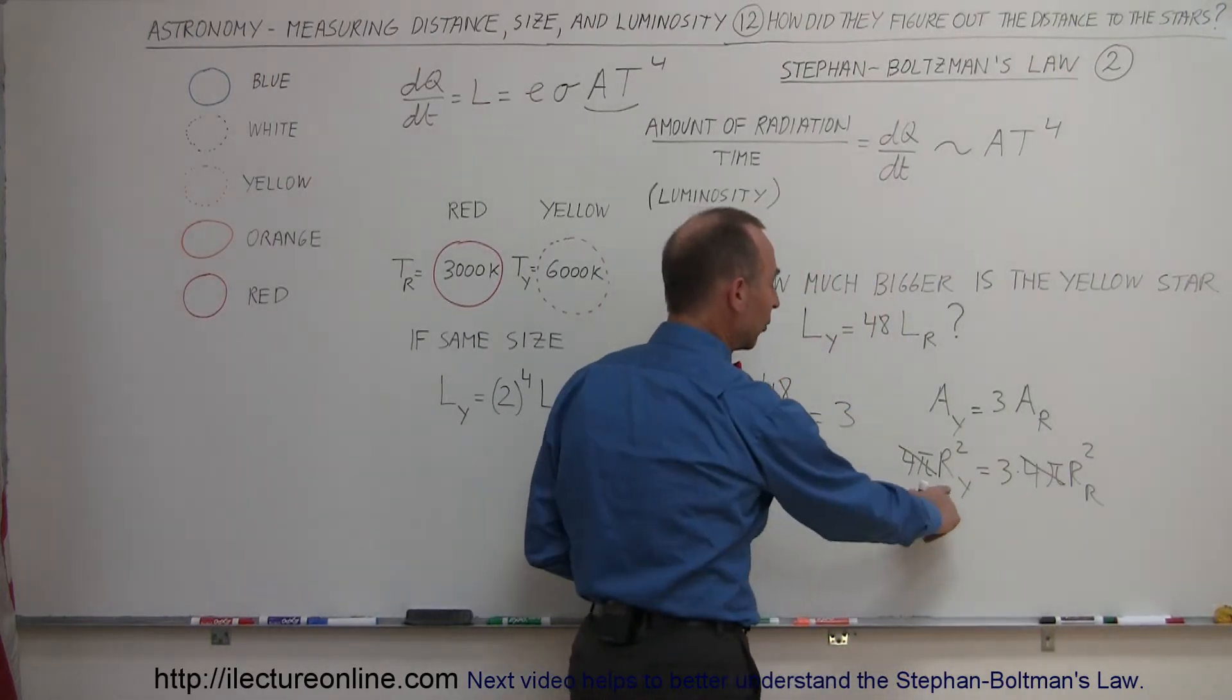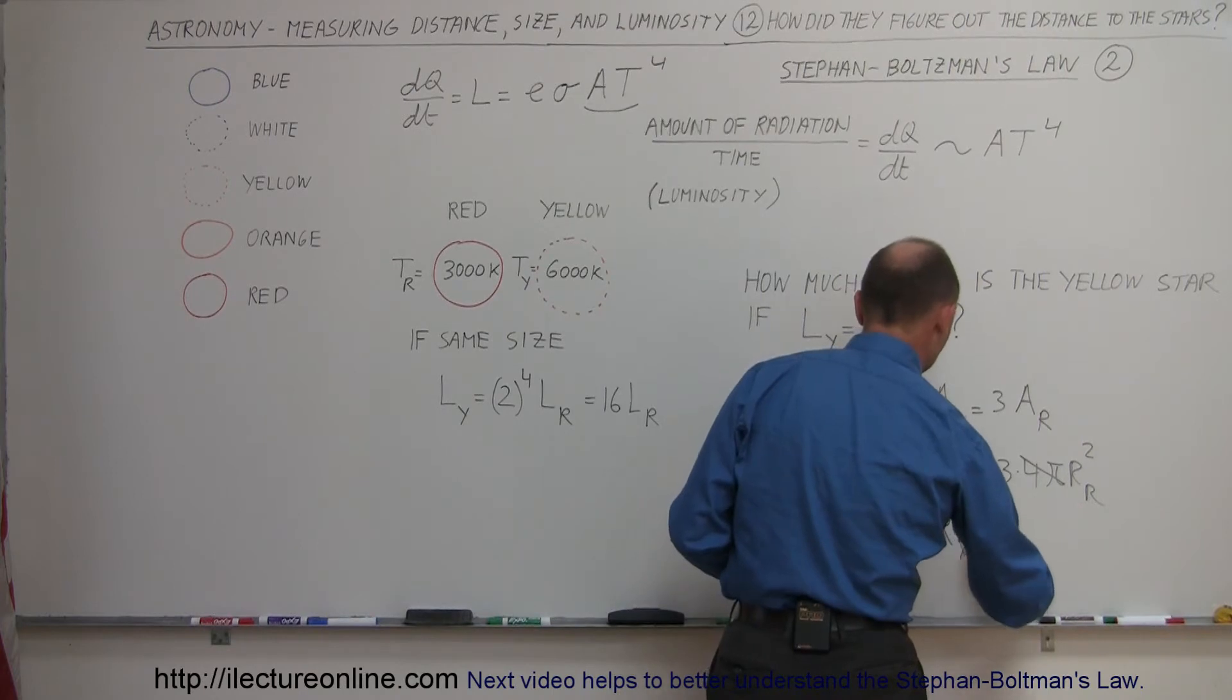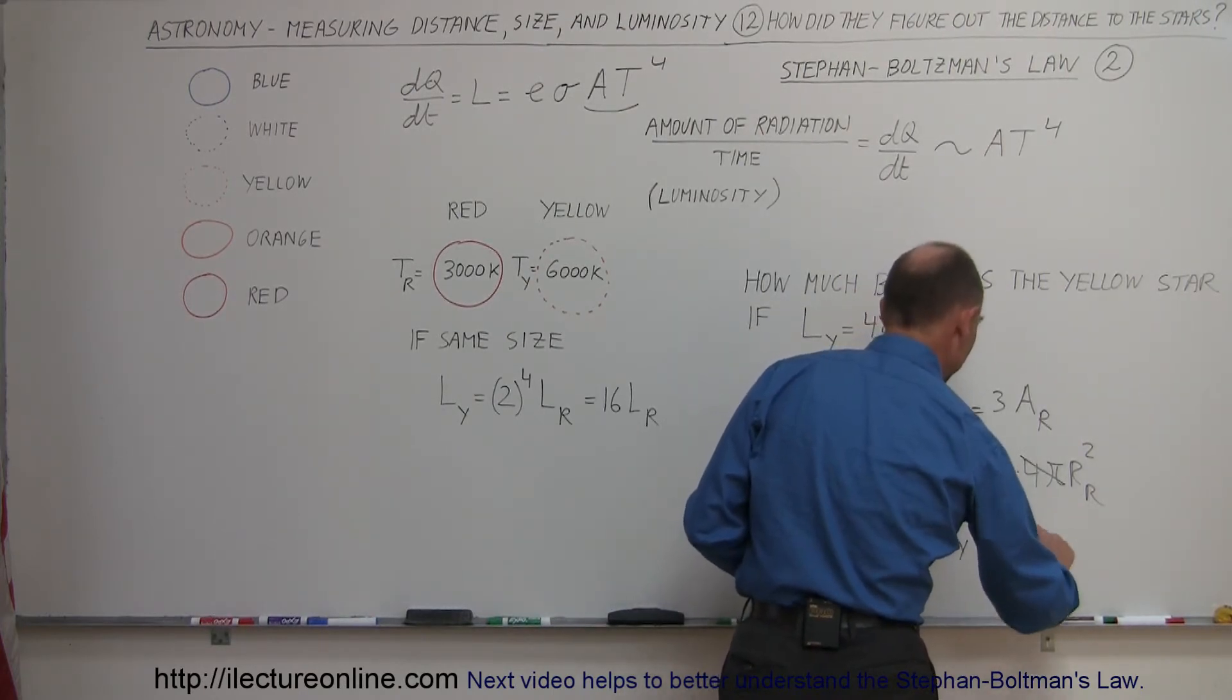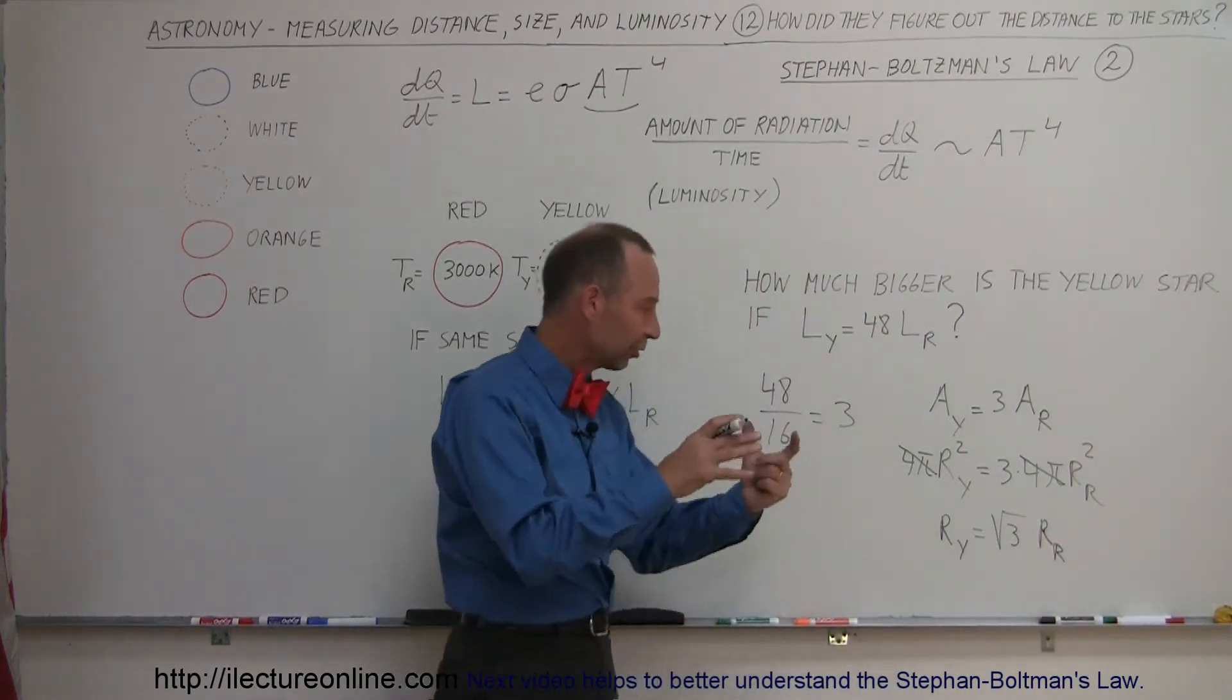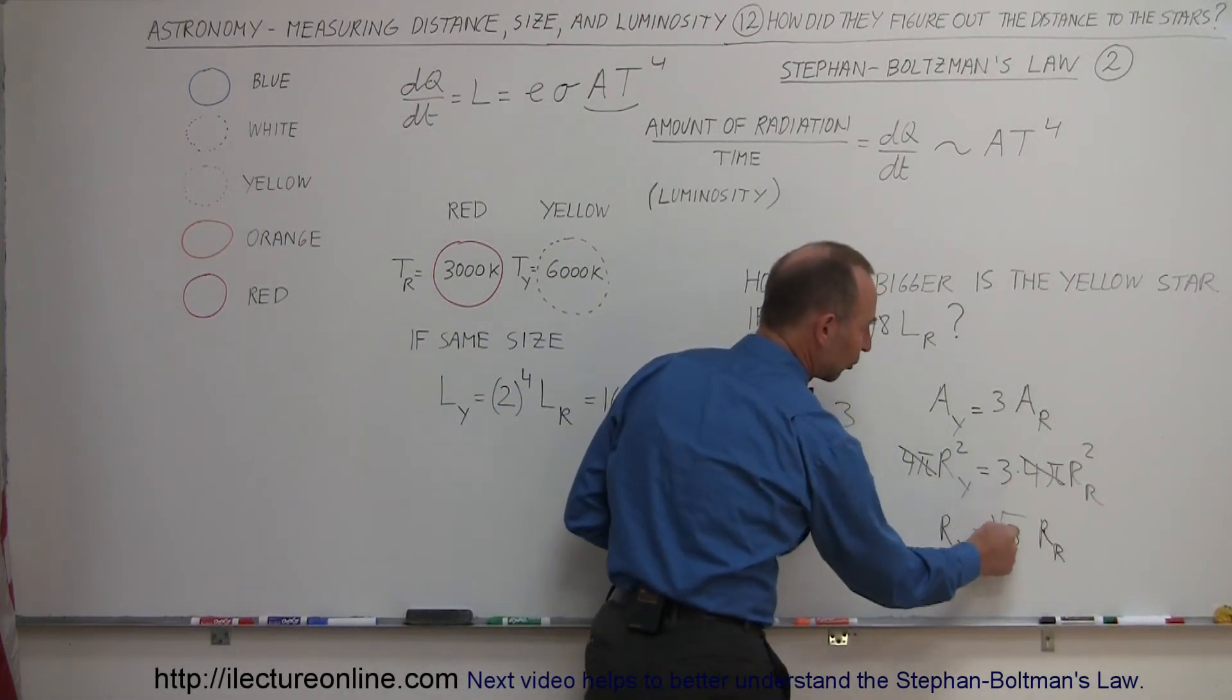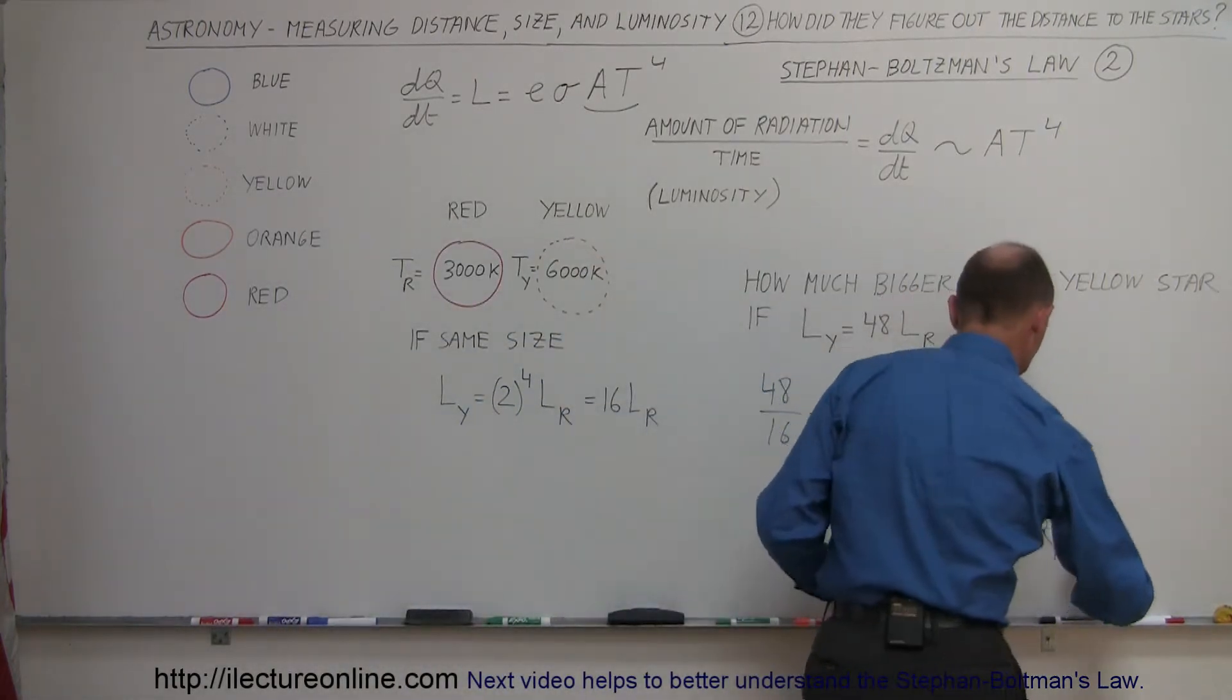And then if I want to find the radius of the yellow star, I can then say that the radius of the yellow star is therefore equal to the square root of three times the radius of the red star. That's because I took the square root of both sides. That means that the squares disappear and I get the square root of three. And of course the square root of three is about 1.72, so that means that's equal to 1.72 times the radius of the red star.